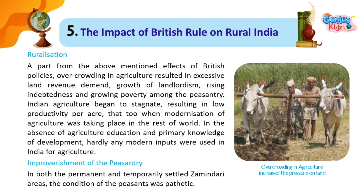Ruralization: Apart from the above-mentioned effects of British policies, overcrowding in agriculture resulted in excessive land revenue demand, growth of landlordism, rising indebtedness and growing poverty among the peasantry. Indian agriculture began to stagnate, resulting in low productivity per acre, even as modernization of agriculture was taking place in the rest of the world. In the absence of agricultural education and basic knowledge of development, hardly any modern inputs were used in India for agriculture.